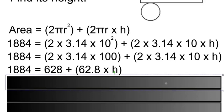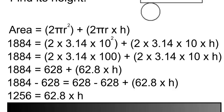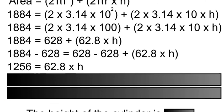We'll now have to subtract the 628 from both sides. So 1,884 minus 628 equals 1,256, and the 628s on the right-hand side will cancel.